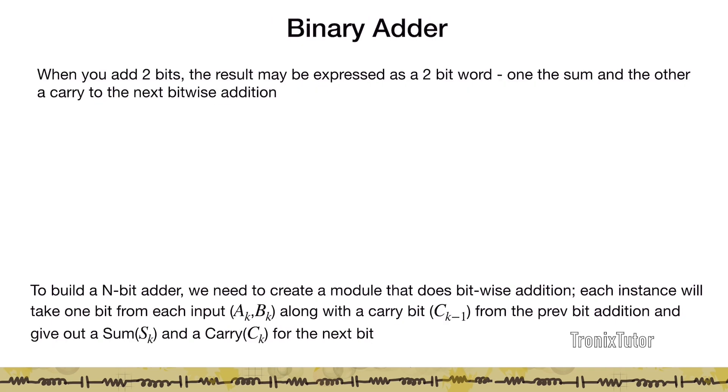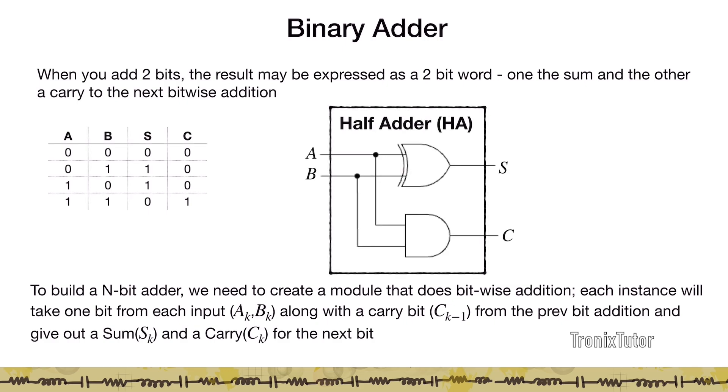When you add two bits, the result may be expressed as a two-bit word: one a sum and the other a carry to the next bitwise operation. For example, if I had an adder with two inputs A and B, an output sum and a carry bit. We're trying to build an adder. We will initially start with building a two-bit adder and then see if we can extend it to larger bits. From the truth table of the binary adder, we get that the sum bit is an XOR of A and B and the carry bit is A AND B. This circuit implements addition of two bits A and B. This is sometimes denoted as the half adder.